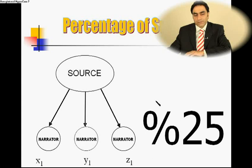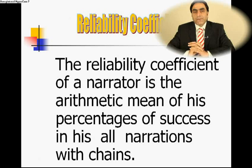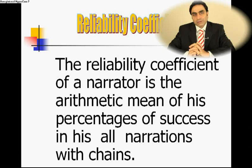If an unknown person came to us with such a narration, his reliability coefficient would decrease from unknown ability to twenty-five percent — that is worse than an unknown person's reliability coefficient. Now let's define the reliability coefficient. I believe you already know this coefficient intuitively in your mind.